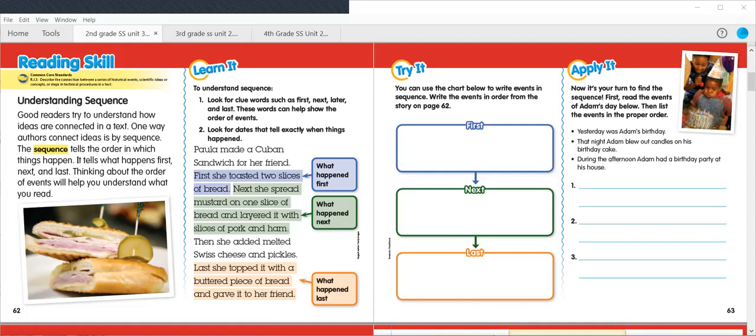Now, for the Learn It section, we're working on sequence. So, sequence is telling things in the order that they happen. To understand sequence, look for clue words such as first, next, later, and last. These words can help to show the order of events. Look for dates that tell exactly when things happened.